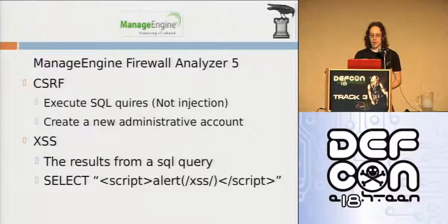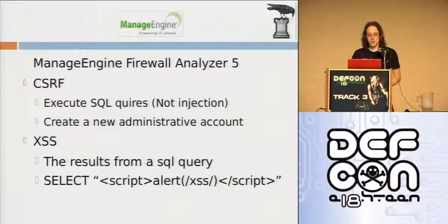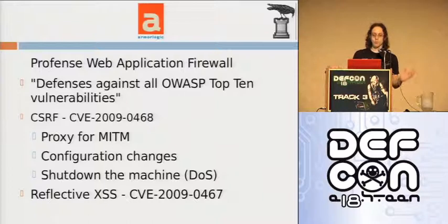In this case, ManageEngine Firewall Analyzer 5 - I found two vulnerabilities in the software: CSRF and XSS. The problem is that on this firewall you're able to execute SQL queries, very similar to PHPMyAdmin. So in this same request I could execute SQL on the database and the results from that SQL could be JavaScript and could be executed on the client. This is really one request that fails twice. Then there's ProFence web application firewall, whose tagline is 'defenses against all of the OWASP Top 10' - someone should tell them that CSRF and XSS are part of the OWASP Top 10, because they're vulnerable to it.